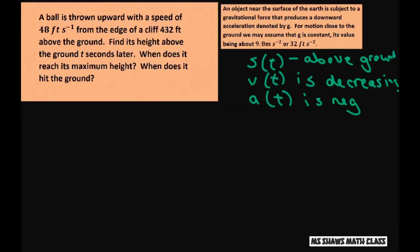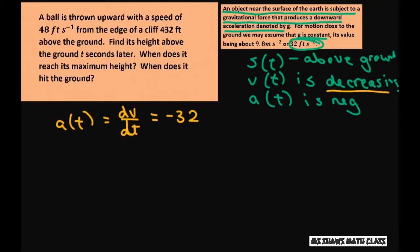Now we're going to use the fact that an object near the surface of the earth is subject to gravitational force that produces downward acceleration. So g is the constant. Since we're in feet we're going to use 32 feet per second squared. So what we're going to do is our acceleration a(t) equals derivative of v with respect to t, and that's going to be negative 32 since we're decreasing and our acceleration is negative.